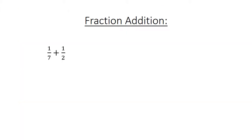Fraction addition. 1 over 7 plus 1 over 2. Find the lowest common multiple. 2 over 14 plus 7 over 14 equals 9 over 14.